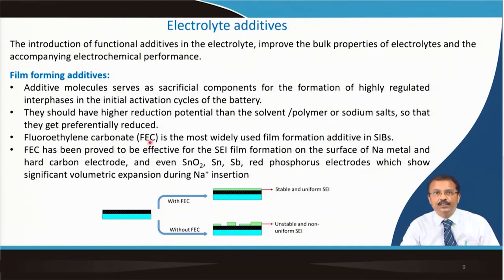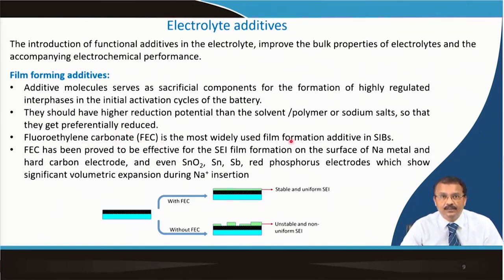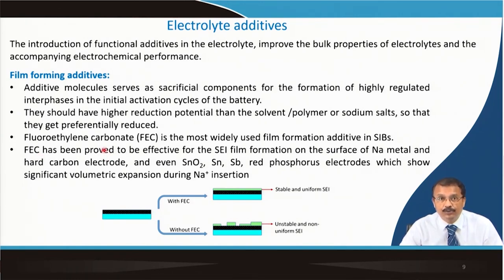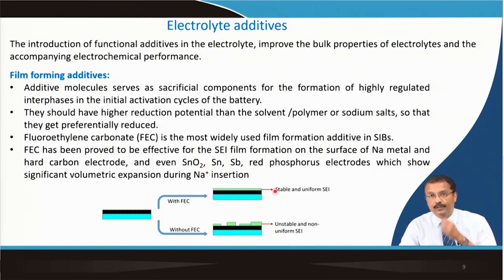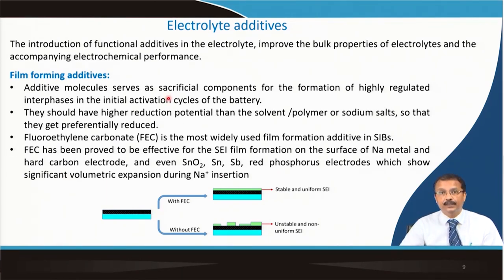These film-forming additives should have a very high reduction potential compared to the solvent, polymer, or sodium salt, so they get preferentially reduced. Fluoroethylene carbonate (FEC) is the most useful additive and has been used for SIBs as well as LIBs. It has been proved effective for SEI formation on the surface of sodium metal, hard carbon electrodes, and even conversion-type anodes like SnO2, alloy-type materials such as SnSb, and red phosphorus. It is a quite good and effective electrolyte additive.